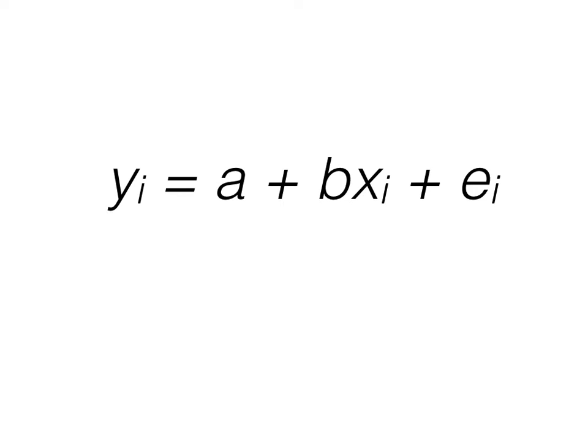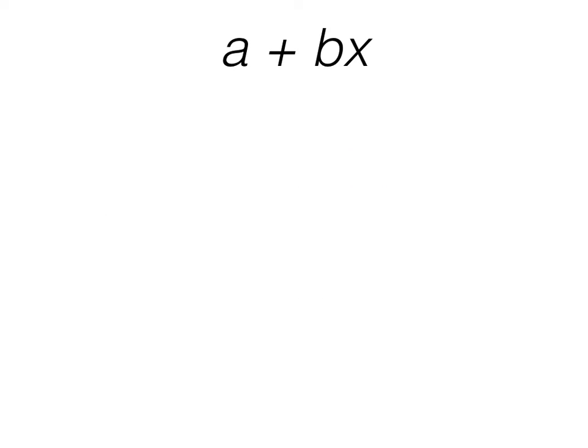So far, we've only talked about our equation in regards to continuous predictors, for example, days. But what happens when our x-value is categorical? To show you why this is important to understand, let's start by breaking down the a plus bx portion of our equation for both continuous and categorical predictors.